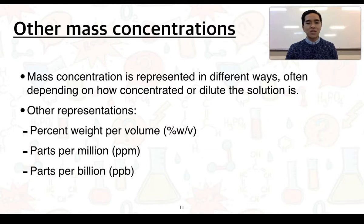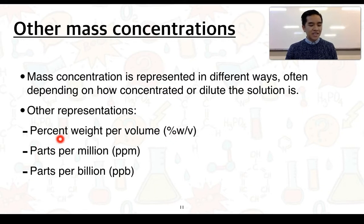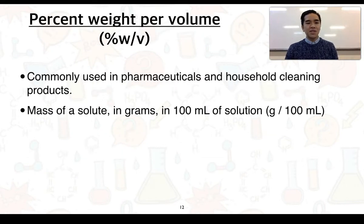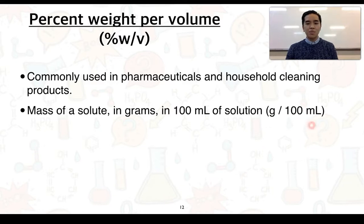There are other ways to represent mass concentrations depending on how concentrated or dilute the solution is. These include percent weight per volume, parts per million, and parts per billion. Percent weight per volume is commonly used in pharmaceuticals and household cleaning products — it's the mass of a solute in grams in every 100 mils of solution, with units of grams per 100 mils. Since it's expressed out of 100, it is effectively a percentage.